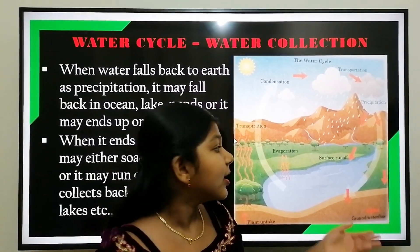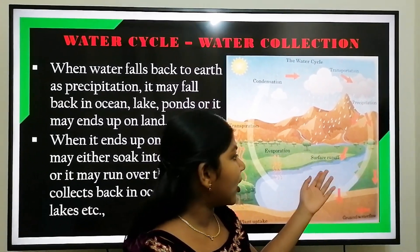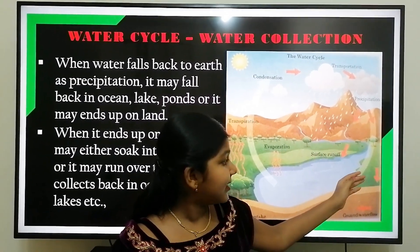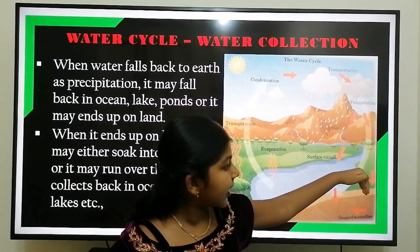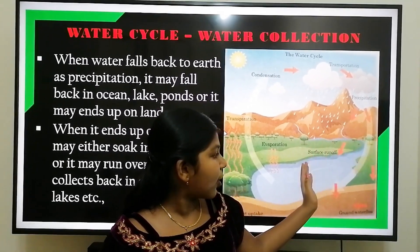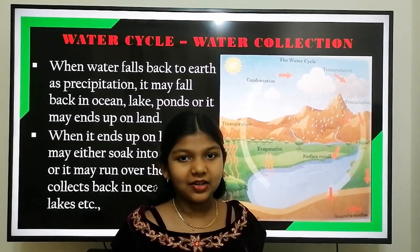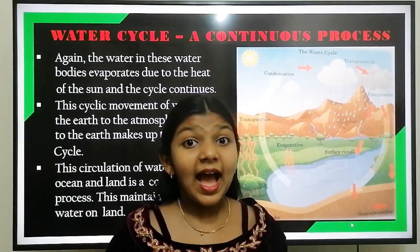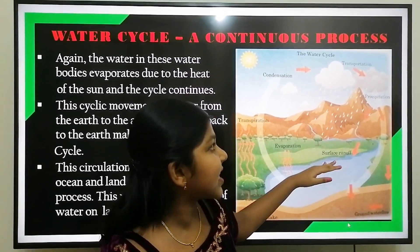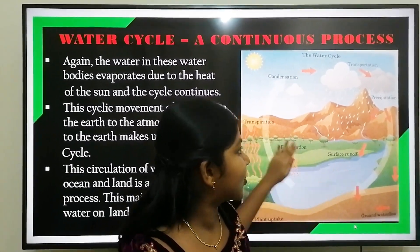When water falls back to the earth, it may fall on the ocean, river, streams, lake, or it may end up on the land. When it ends up on the land, it may either get soaked into the earth or run over the soil and get collected back in the ocean, river, lake, or streams. Again, the water in these water bodies gets evaporated due to the heat of the sun, and the cycle continues.